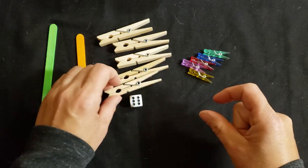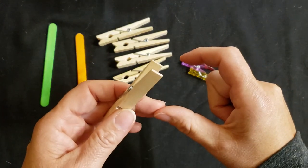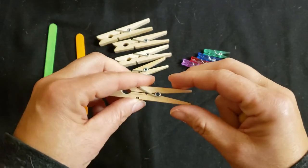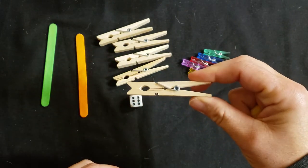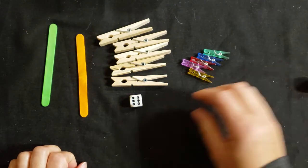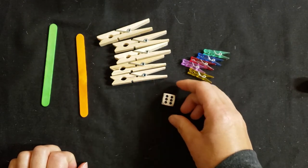For the regular clothespin, you can pinch and squeeze it with your thumb and pointer, or thumb, pointer, and middle finger—whichever is easiest. For our game, we're going to roll the dice, count the number, and then put that many clothespins on the popsicle stick.